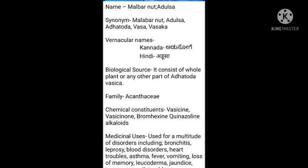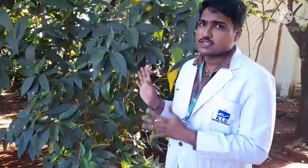You can see the Vasaka plant attached with the QR code. After scanning, you will get the complete pharmacognostical profile of the Vasaka plant — including synonym, vernacular names in Kannada and Hindi, biological source, family, chemical constituents, and their medicinal utility — all displayed on your screen within a fraction of a second.